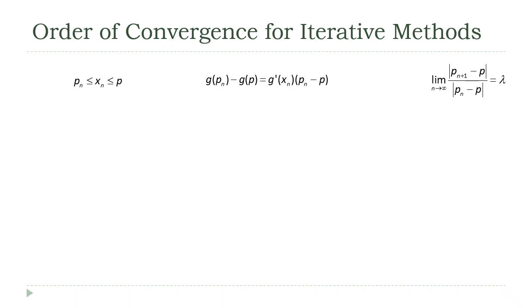Now, remember that the sequence x sub n converges to p. So if you look back at the inequality, the left side converges to p, and the right side, the constant term p, also converges to p. So by the squeeze theorem for sequences, the sequence of x values must also converge to p.